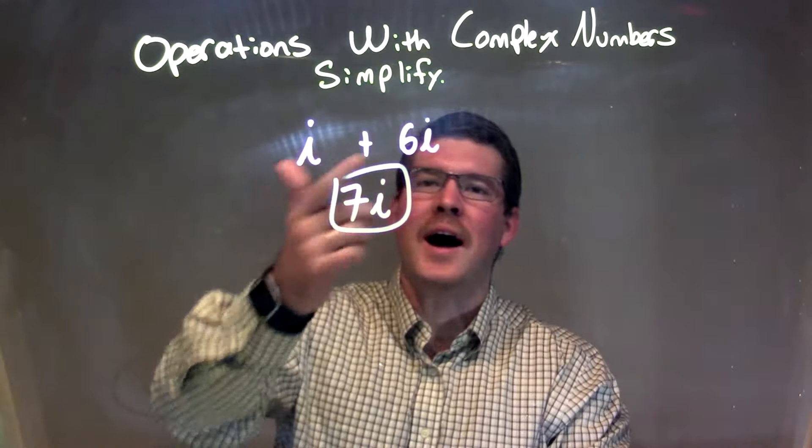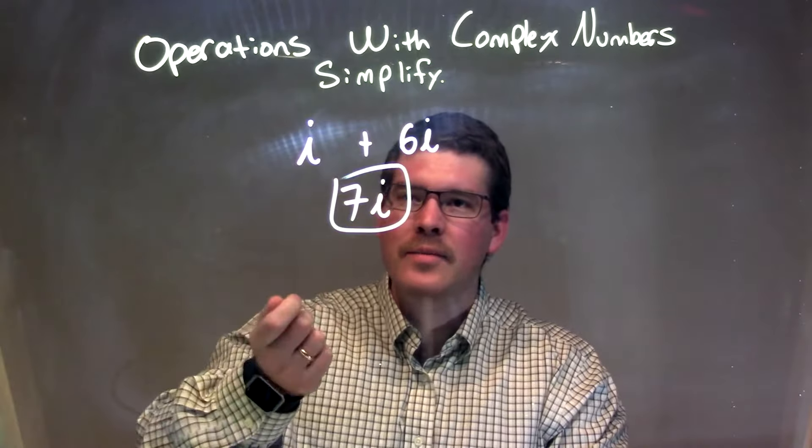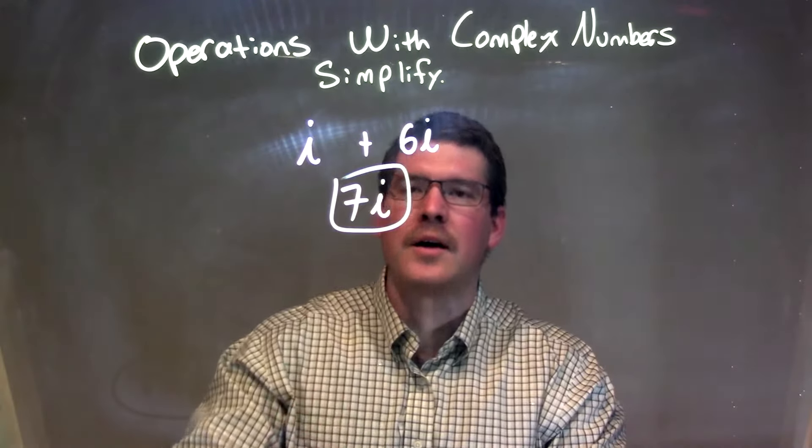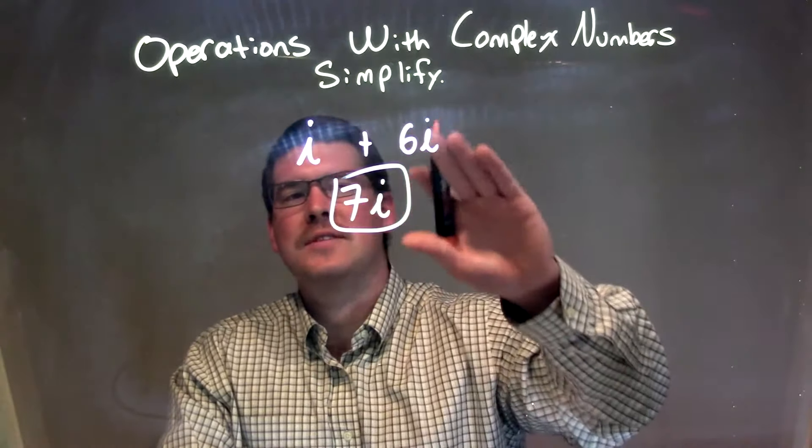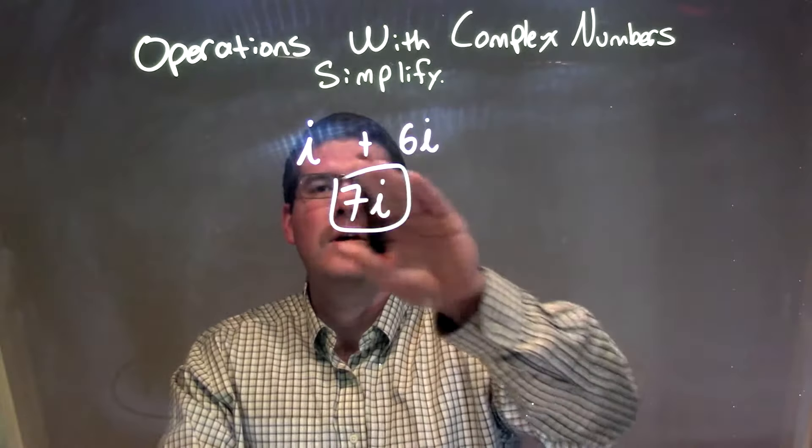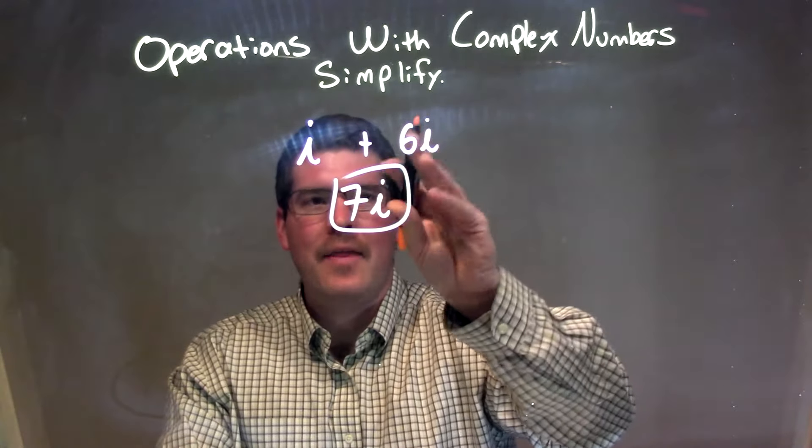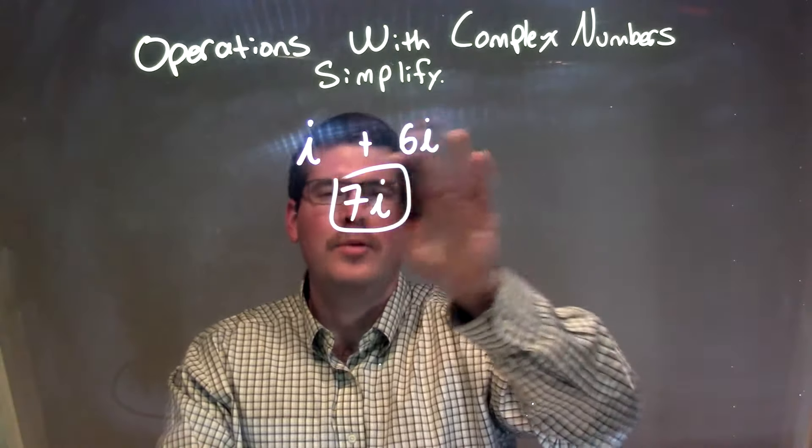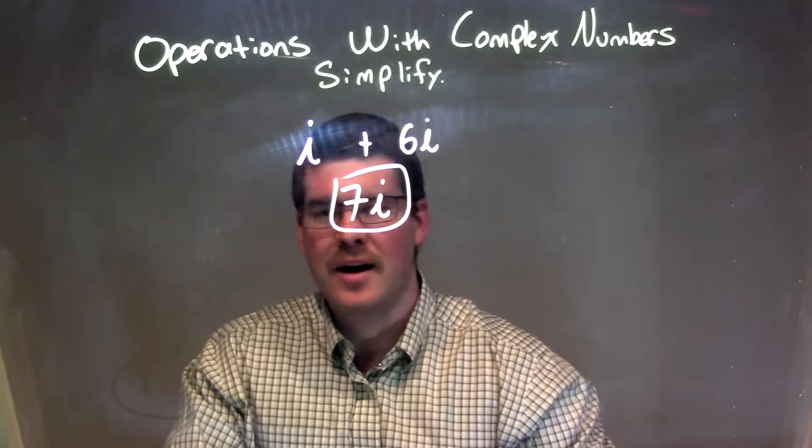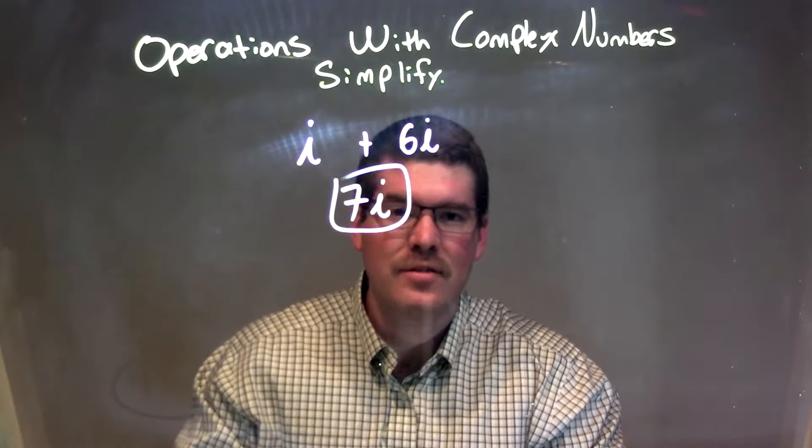So, quick recap, we have i plus 6i. To combine them together, to add them together, to simplify, we can treat them just like a variable. So we have i plus 6i, we add them together, our i's look like a variable, add them together to get 7i. And so our final answer, again, is just 7i.